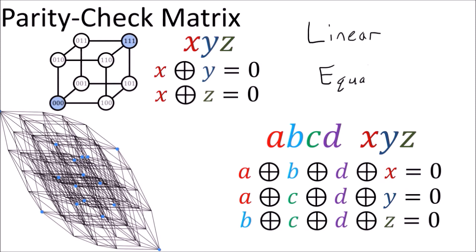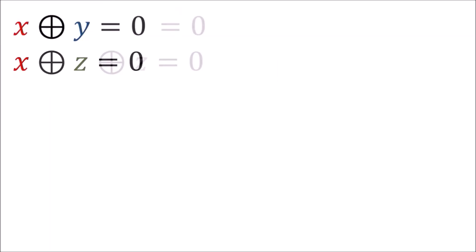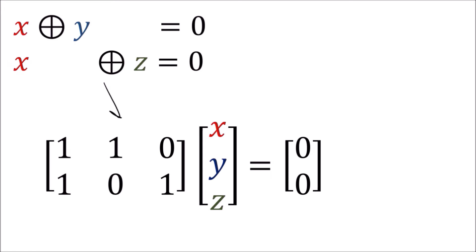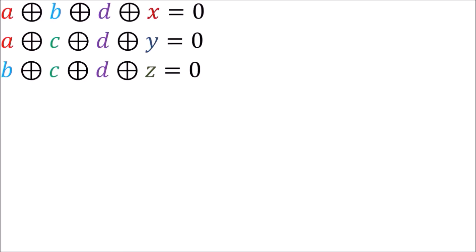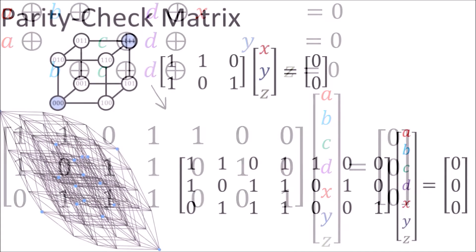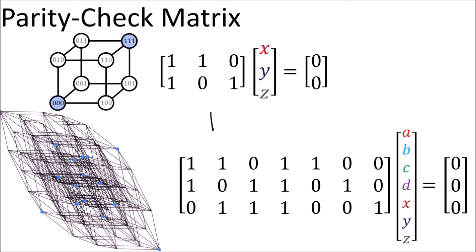These are all actually linear equations — linear combinations of variables. So we can rewrite this as a matrix equation where the right-hand side equals 0. We can do the same thing for these equations, giving us the parity check matrices H for the 2-of-3 repetition code and the Hamming 7-4 code.